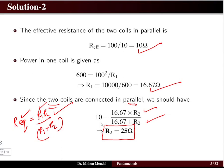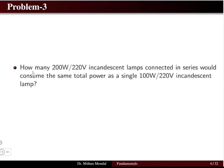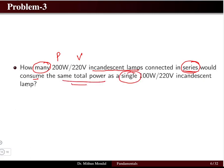This is the solution for problem number two. In problem number three, the question relates to incandescent lamps connected in series, each rated 200 watts and 220 volts. How many of these lamps connected in series consume the same total power as a single lamp rated 100 watts at 220 volts?